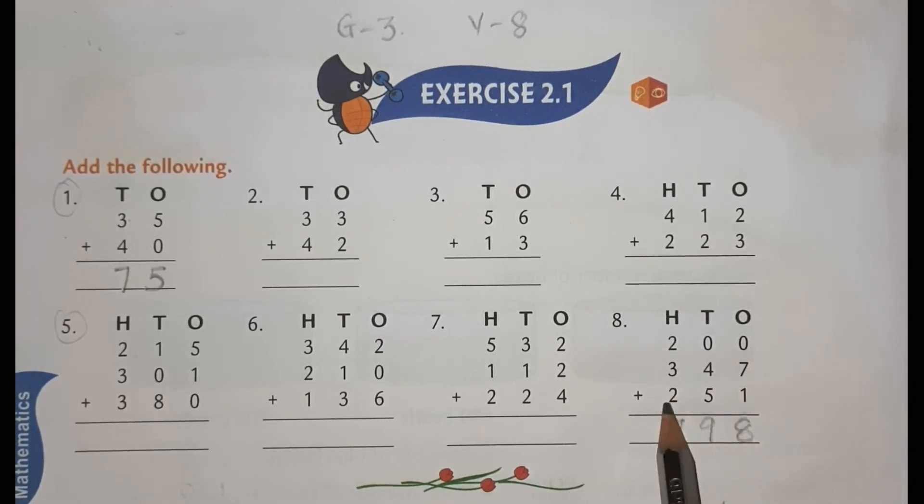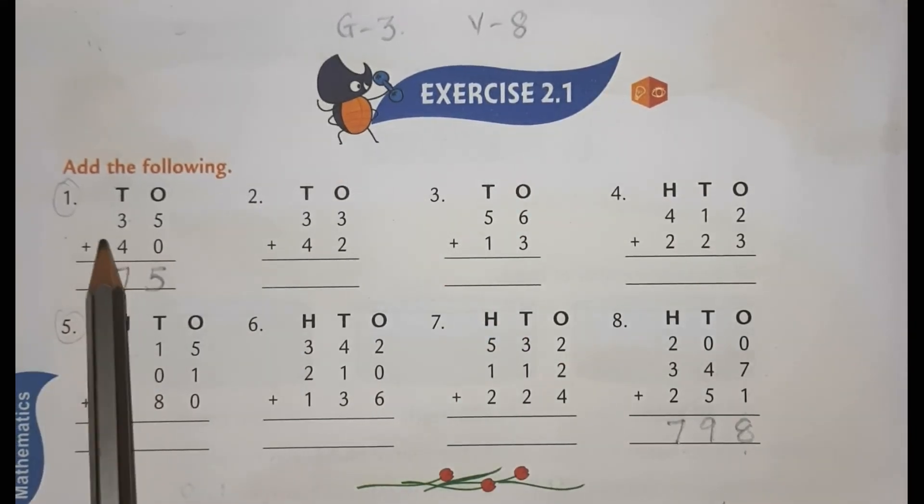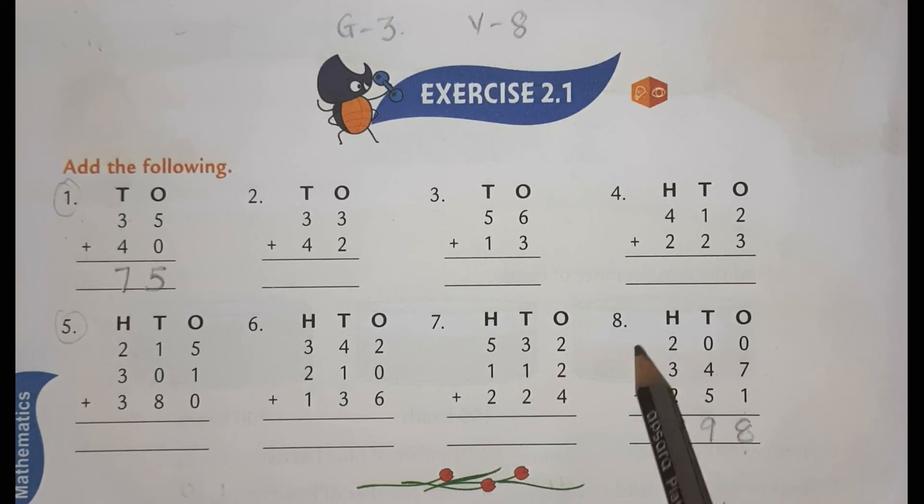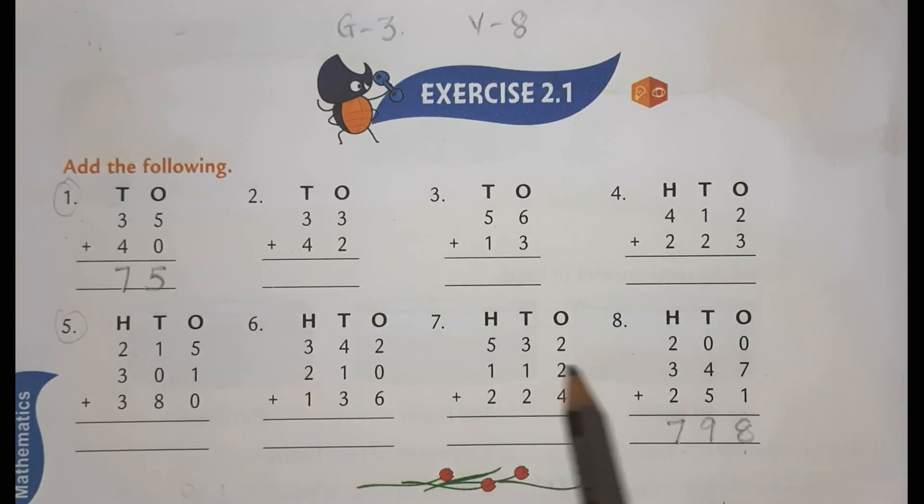200 plus 347 plus 251 will become 798. So, like this, you have to solve exercise 2.1. I have solved for you sum number 1 and 8. So, you have to do 2, 3, 4, 5, 6, 7 in the textbook. And after that, you have to write these all 8 sums in your notebook in neat writing. Thank you.